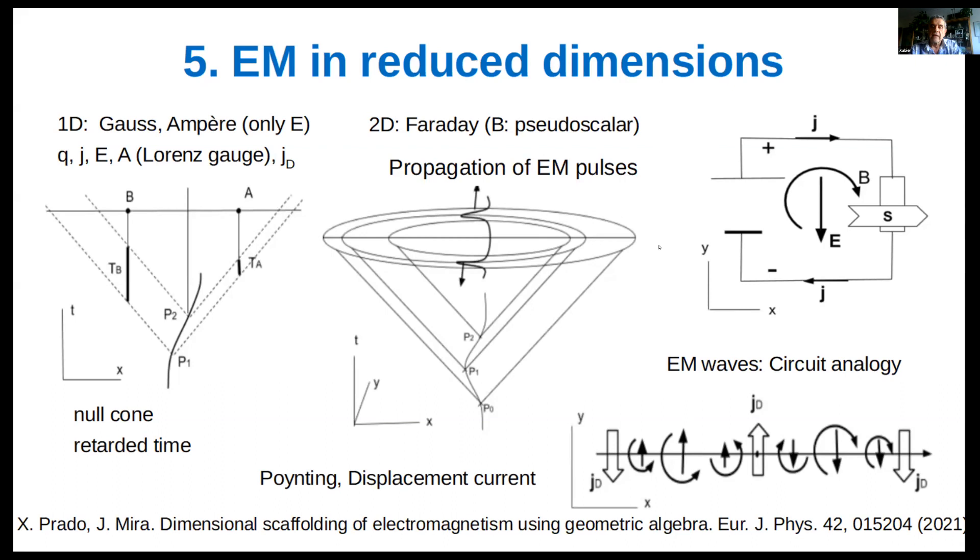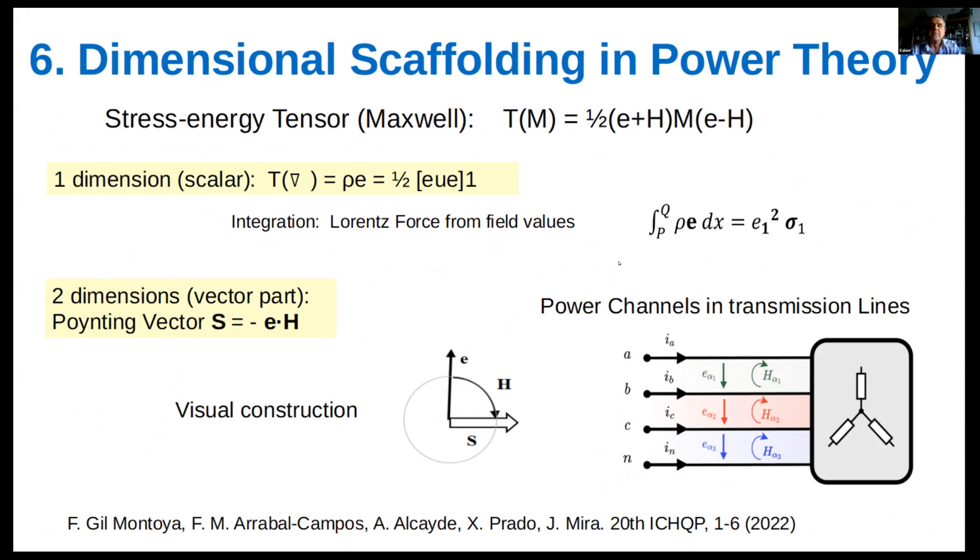The theory of electric power flow is a theory in which we have already done some work with Professor Montoya. Using geometric algebra, a simple quadratic equation encodes the main magnitudes in power theory. In one dimension, its scalar part renders the stress energy or Maxwell tensor. In two dimensions, its vector part renders the Poynting vector, which is fundamental for power transmission. Its behavior in three dimensions is complicated but can be simplified in two dimensions using the concept of power channel.